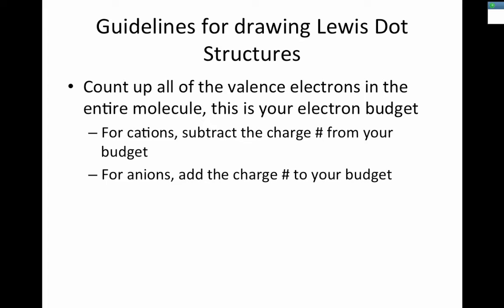The first thing we need to know is how to count up all the valence electrons in the entire molecule. For instance, for CO2: carbon has four valence electrons, and each oxygen has six valence electrons — there are two of them, so that's 12. That gives us 16 total valence electrons.